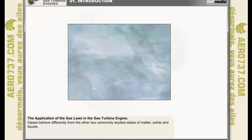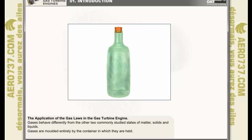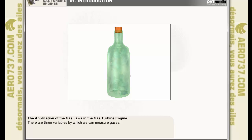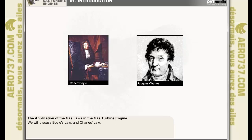Gases behave differently from the other two commonly studied states of matter, solids and liquids, so we have different methods for treating gases and understanding how they behave under certain conditions. Gases, unlike solids and liquids, have neither fixed volume nor shape. They are molded entirely by the container in which they are held. There are three variables by which we can measure gases: Volume, Pressure and Temperature. We'll discuss two of the so-called gas laws which are most pertinent to the operation of the gas turbine engine: Boyle's law and Charles' law.